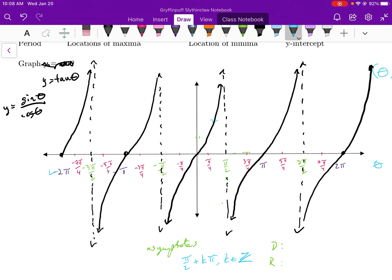So pi over two plus every multiple of k pi, where k is an element of the integers. Your domain is going to be